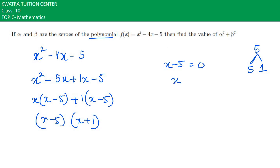So what do we get? x = 5, which is nothing but alpha. We have x + 1 = 0, so x will be -1, which is beta.